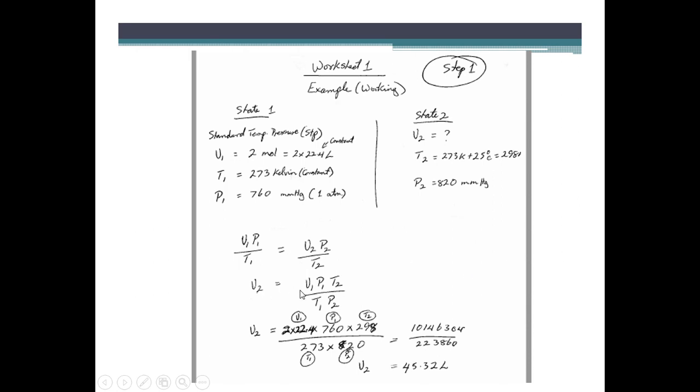Firstly, we reorganize our equation in order to solve for V2. So we want to make sure V2 is on this side and our equation facilitates that. Then we just plug in all the information at this point. So V1, we know this is V1, so that's 2 by 22.4, multiplied by P1, 760, multiplied by T2, this is our T2 here, 298, then we divide by T1, 273, just follow with my cursor here, and multiply that by P2, so that's 820. And you just continue your calculation and your final answer for V2 should be 45.32 liters.